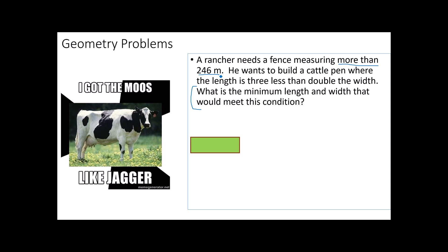Let's go through and define our variables. Since this is a geometry problem, we typically would define the variables by adding them to the picture. This problem says a rancher needs a fence measuring more than 246. Fencing goes around the yard, which makes the 246 our perimeter. He wants to build a cattle pen where the length is three less than double the width. Can you write that? Two W minus three is your length. That's only true if W is your width. The last thing we have to realize is that perimeter is the distance around, which means you need to add up all four sides. It is very common for people to forget to do all four sides. Here's your length added to your width, added to your length, added to your width, and it has to be more than 246. More than is a greater than symbol.